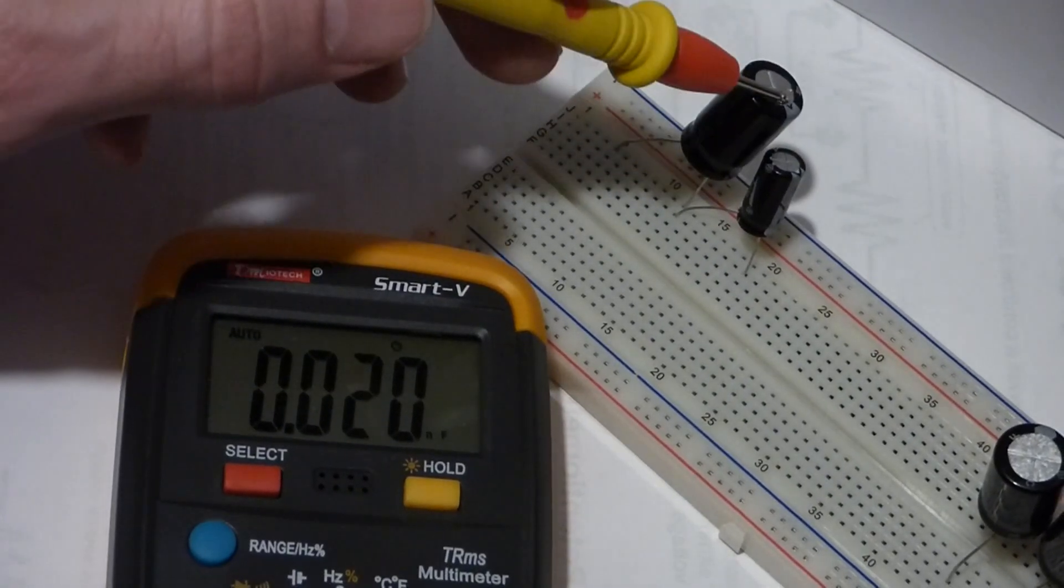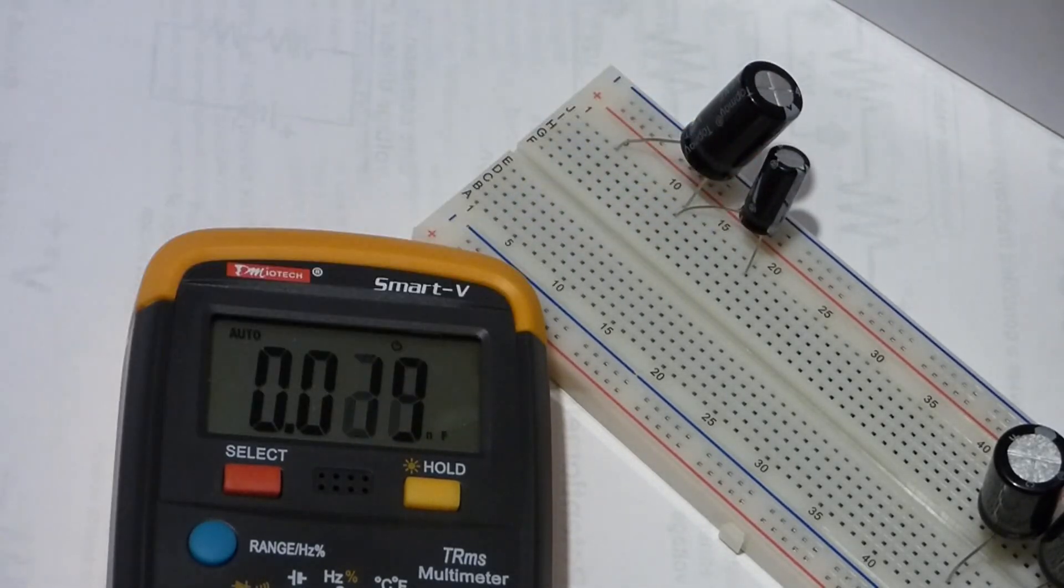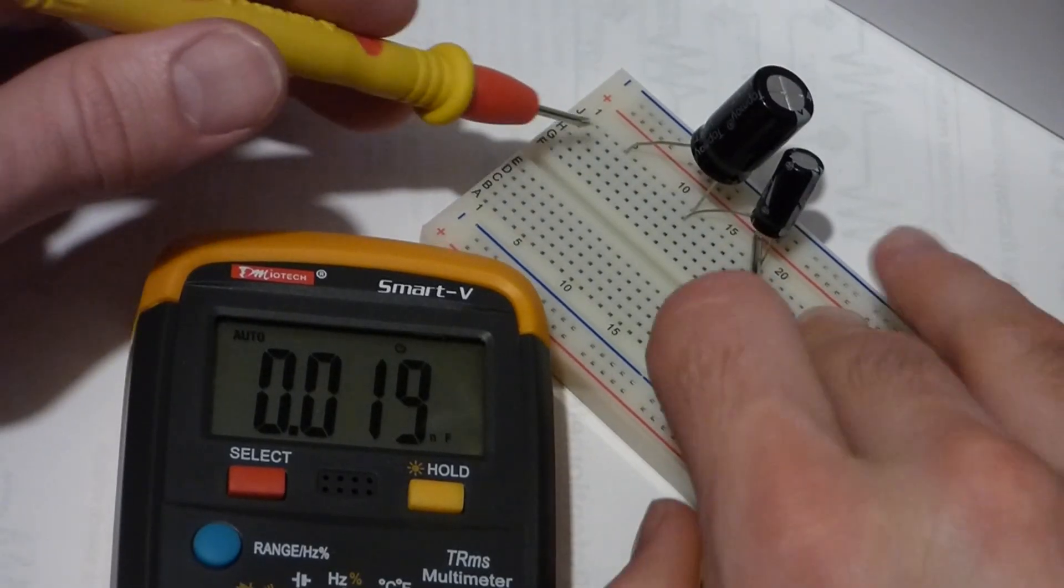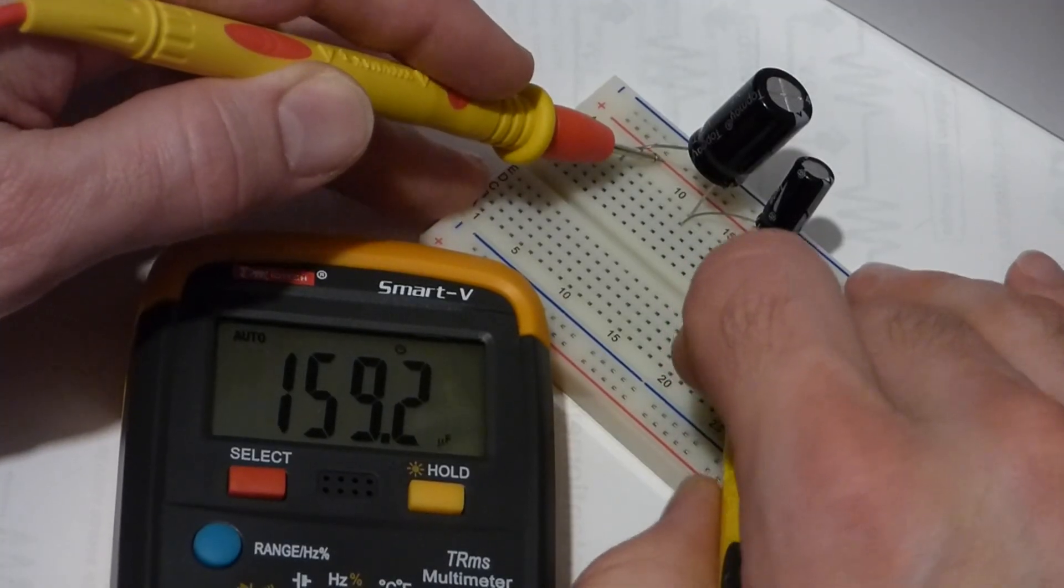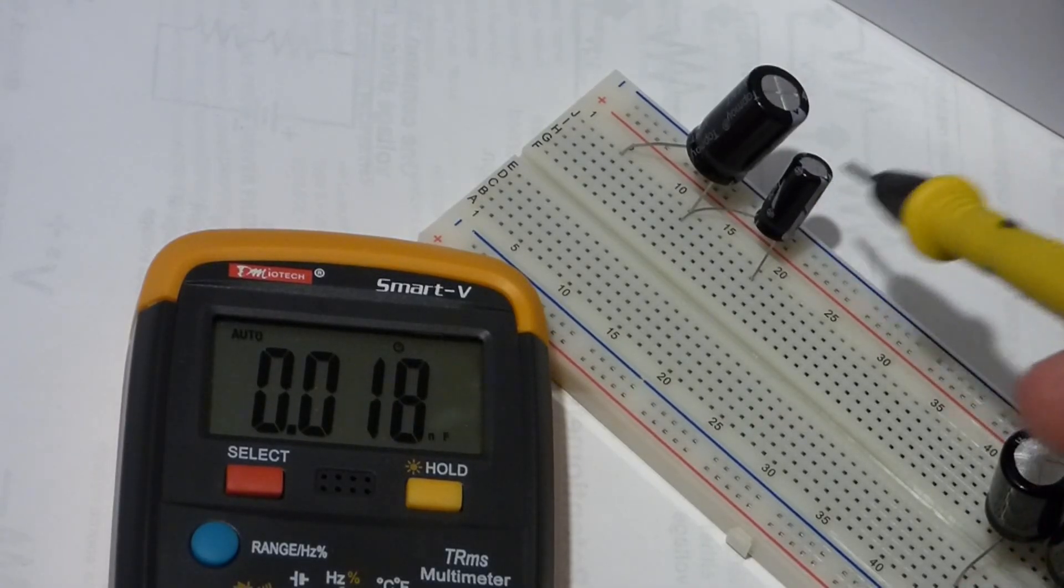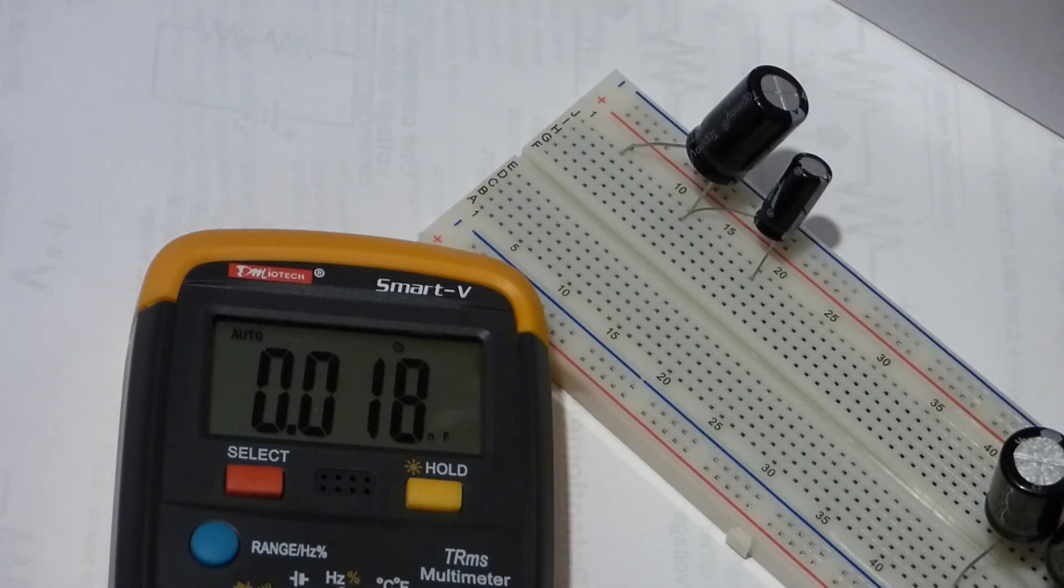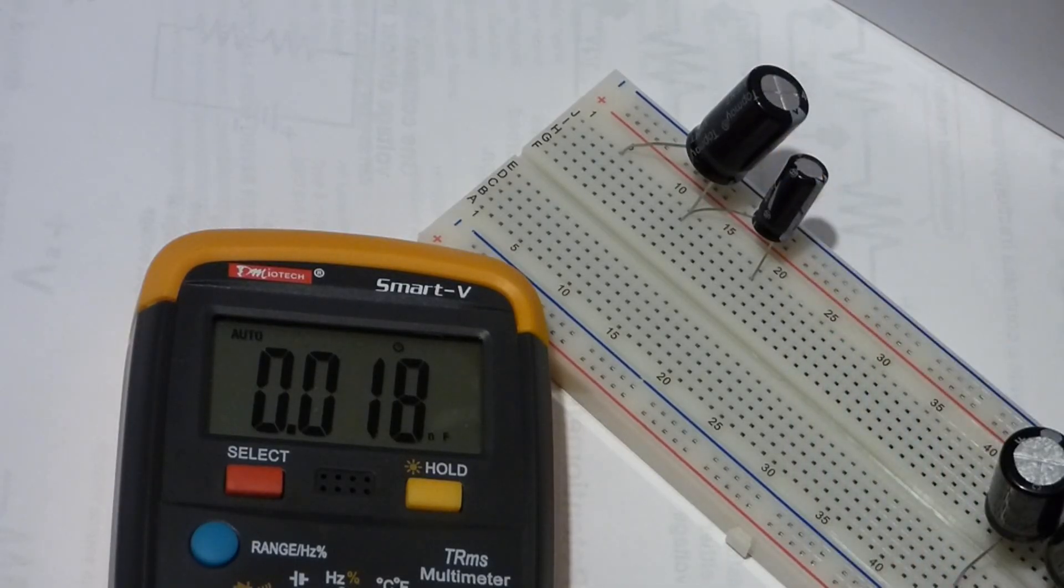Now we have the 470 microfarad capacitor and the 220 microfarad capacitor in series. And when we take a measurement, you will see that it comes to about 160 microfarad. Now if you remember, that was the same capacitance as three of these 470 microfarad capacitors in series. So this almost took the place of two of these in series.